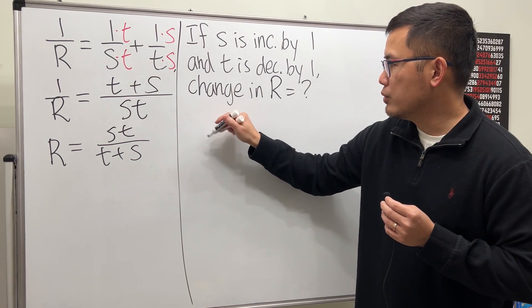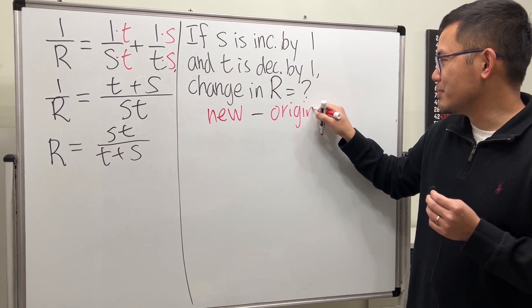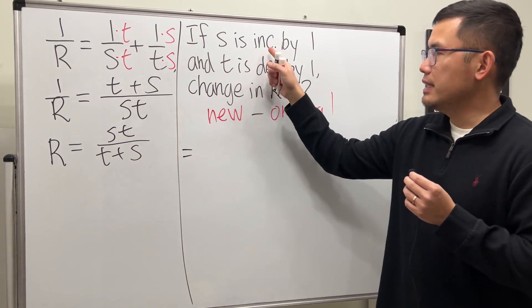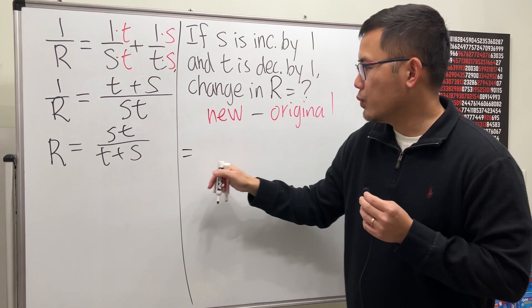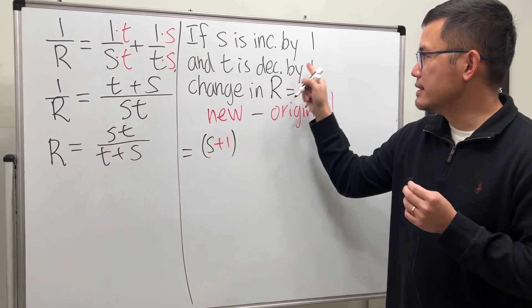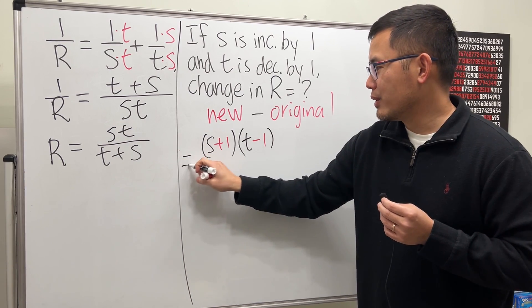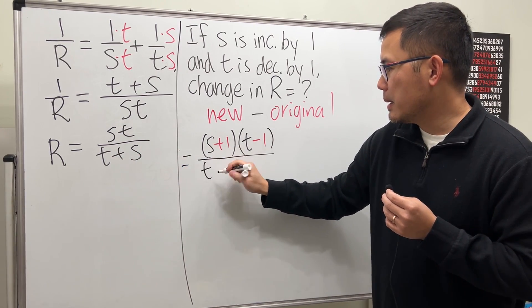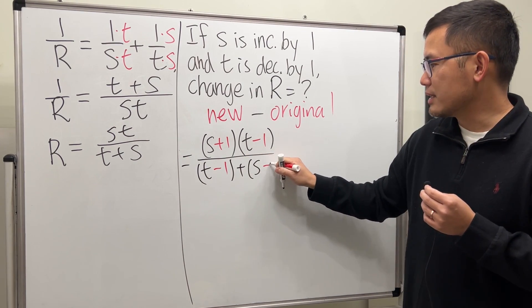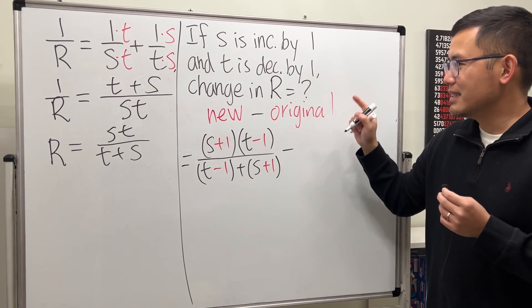It's going to be the new minus the original. For the new R, S is increased by one so we have S plus one. Then T is decreased by one so T minus one. We write this over T minus one plus S plus one.